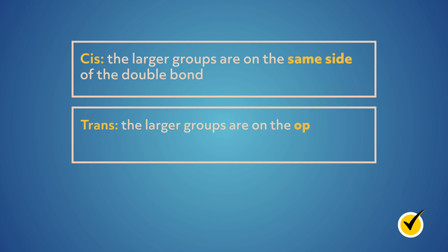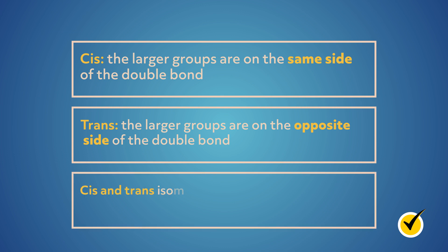We differentiate between these two structures with the names cis and trans. Cis means the larger groups are on the same side of the double bond and trans means the larger groups are on the opposite side of the double bond. Remember, cis and trans isomers are only possible in alkenes because of the restricted rotation. Since there is free rotation around the bonds in alkanes, cis and trans isomers do not exist for alkanes.